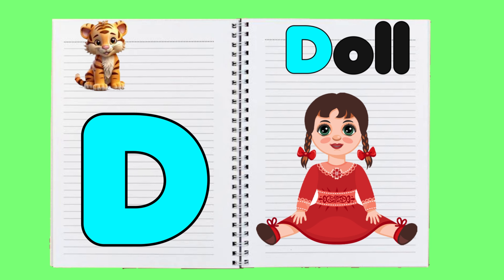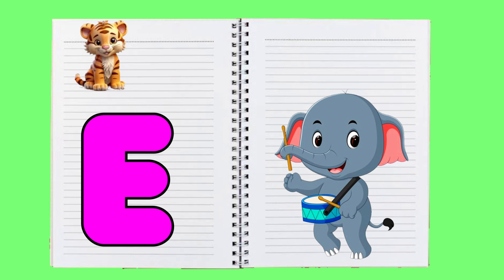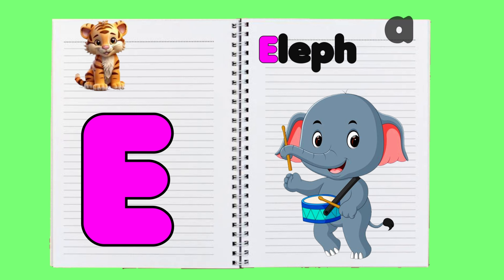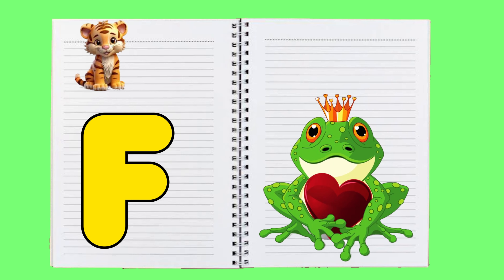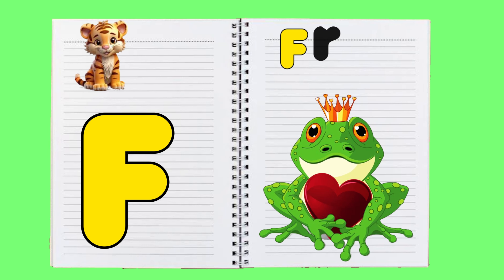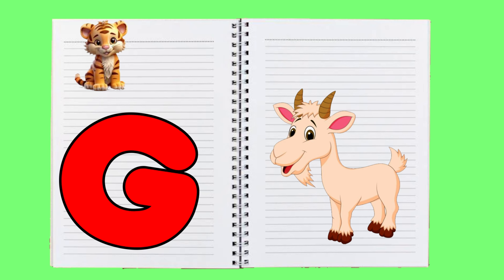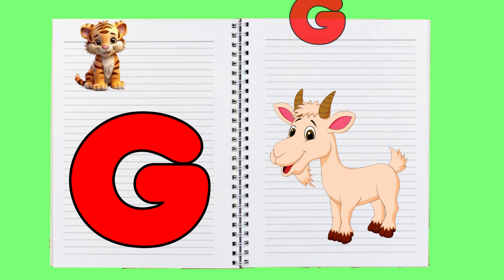E is for elephant, e-e-elephant. F is for frog, f-f-frog. G is for goat, g-g-goat.